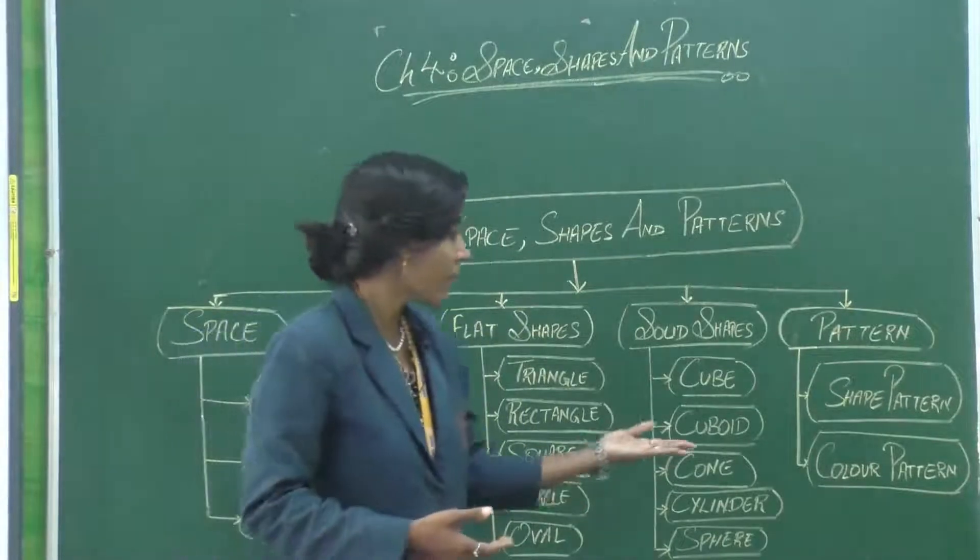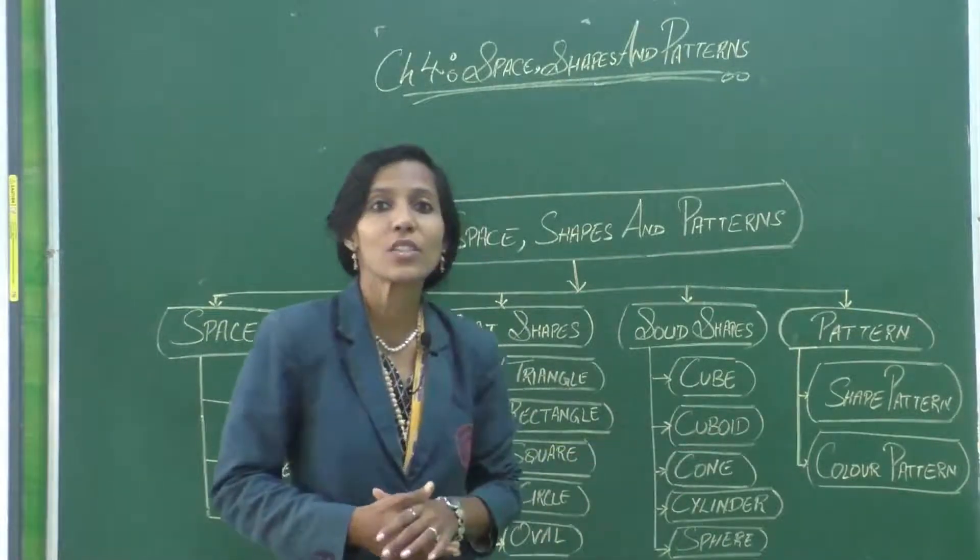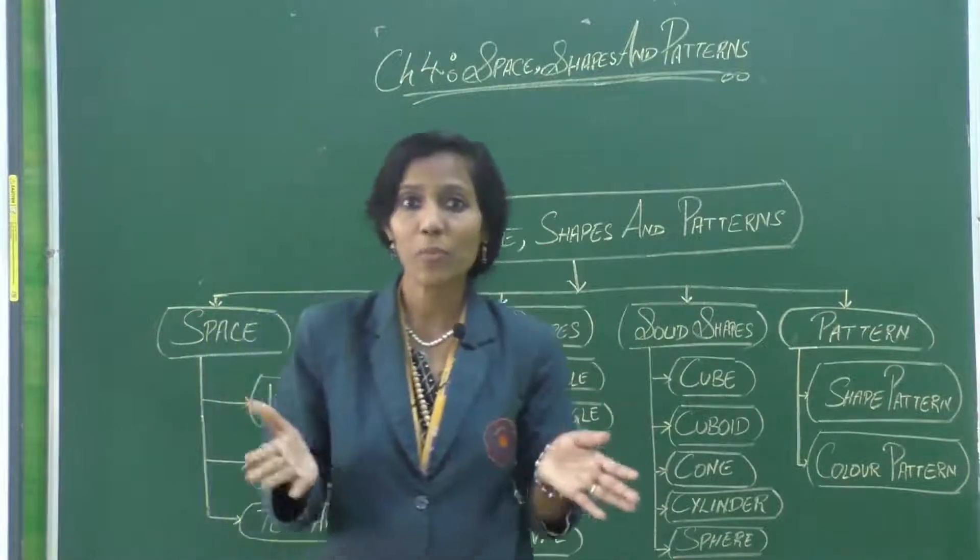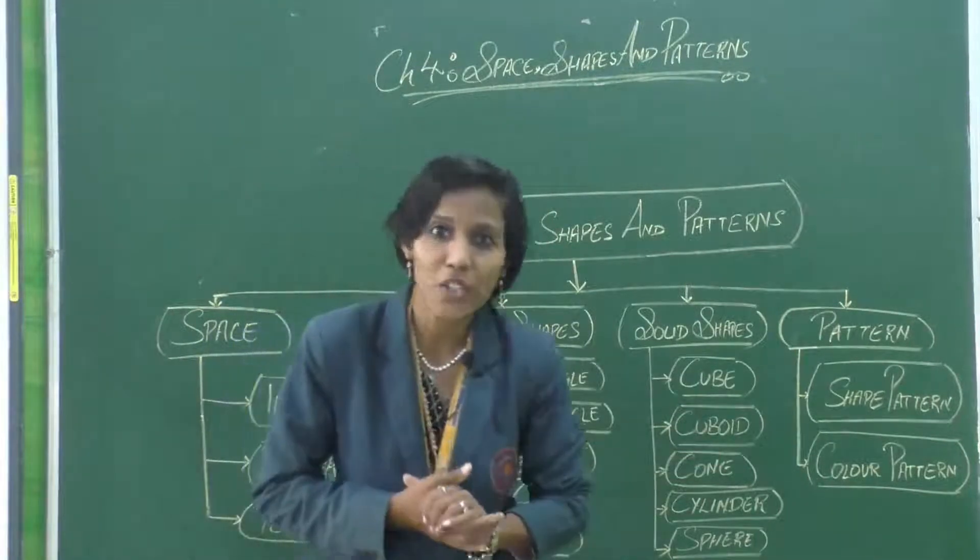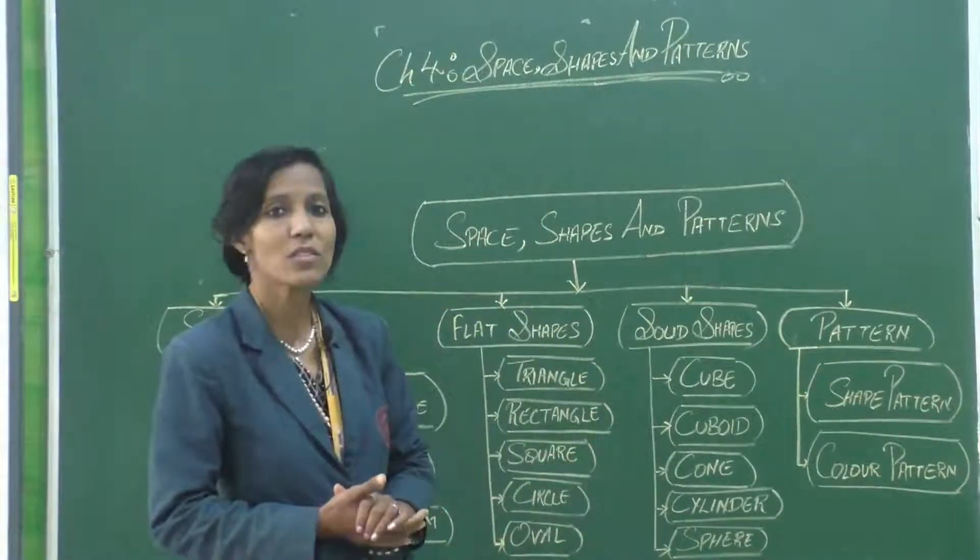Cuboid - you have the gift box in cuboid shape, cube - the Rubik's cube. So many items that are there in solid shapes that we can relate to these shapes.